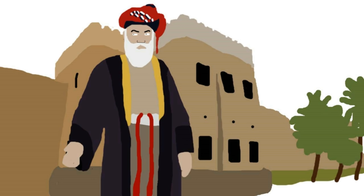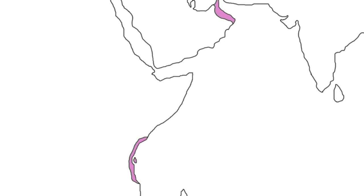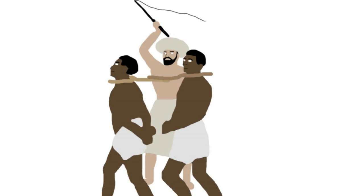Zanzibar had been part of Oman since they took it over from the Portuguese in the late 17th century. But in 1858, Syed bin Sultan died and his realm was divided between his sons, with Sultan Majid bin Syed taking Zanzibar. His rule wasn't constrained to the island alone — as the centre of the slave trade in Africa, Zanzibar traders had trading posts as far away as central Congo.